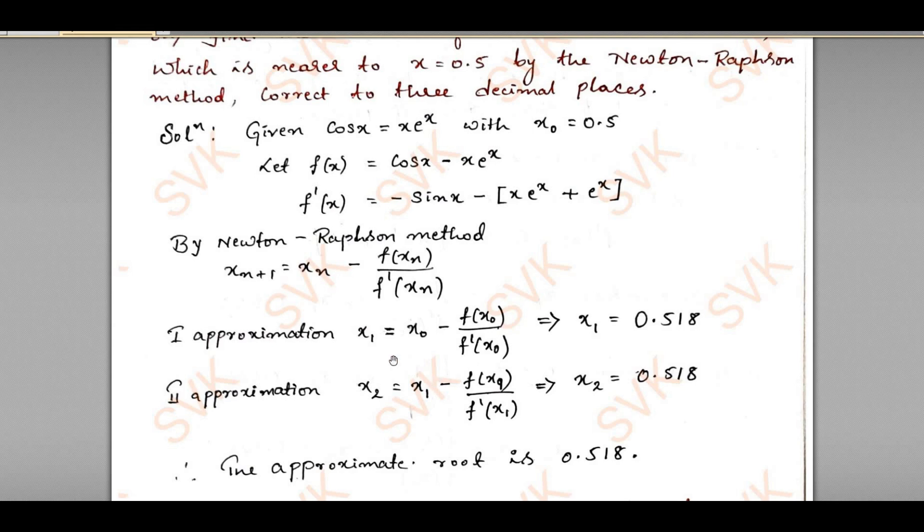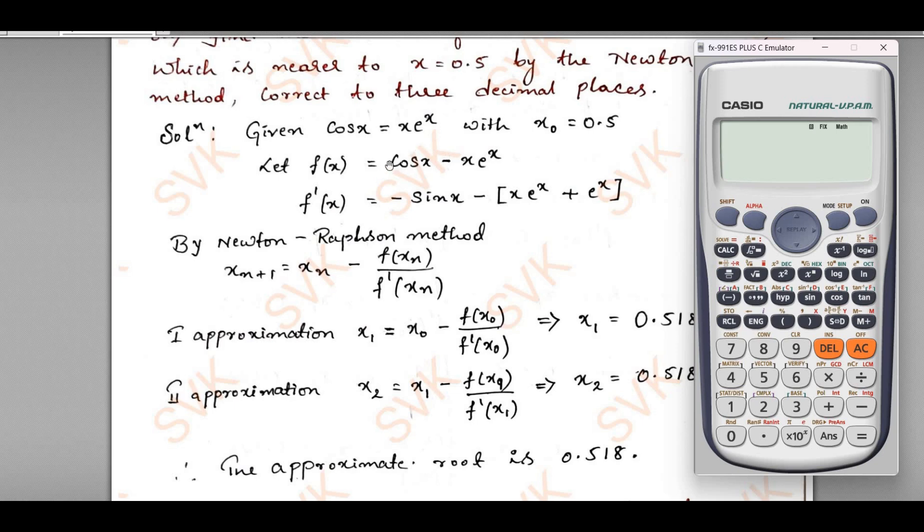Now let us see how to solve for 0.518 by using your calculator. As we have trigonometric functions, the calculator should be in radian mode. Change to radian mode and I have asked for fix for three decimal places. Fix the calculator for three decimal places. I have done all these things. Now just I will start with x₀ value. The x₀ value is 0.5 plus equal to, then I will start with directly x₁.